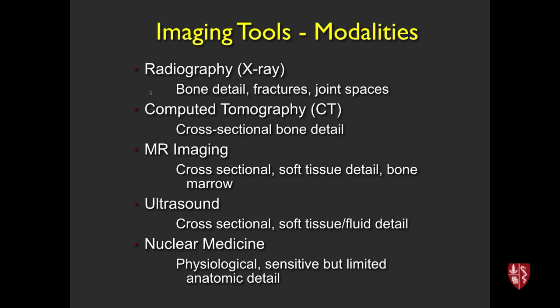The main imaging tools: radiography or x-ray — good for bone detail, fractures, joint spaces; CT — cross-sectional x-ray, good for bone detail, not as good for soft tissues; MRI — great for cross-sectional imaging, soft tissue detail, fluid, bone marrow. The main two we use in MSK practice are radiography and MRI, with CT third. We also use ultrasound, which doesn't penetrate through bone but sees soft tissues well. Nuclear medicine is a very sensitive correlative tool, though with less anatomic detail than traditional bone scans.